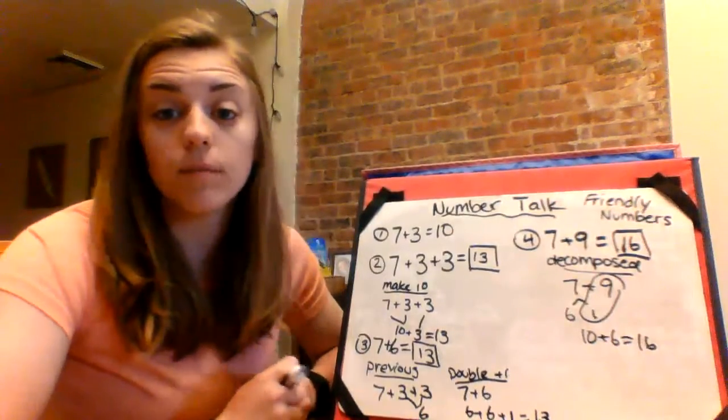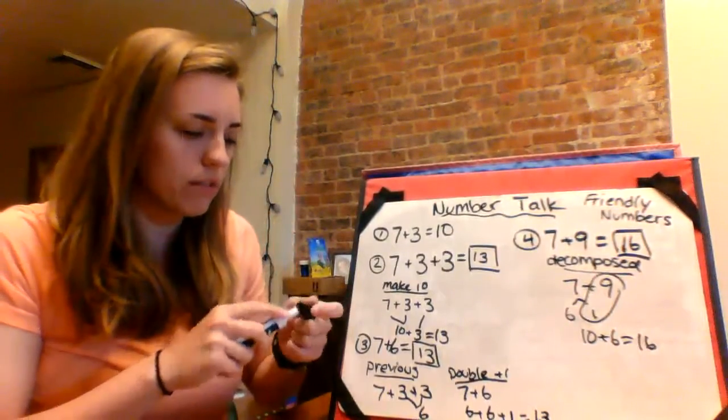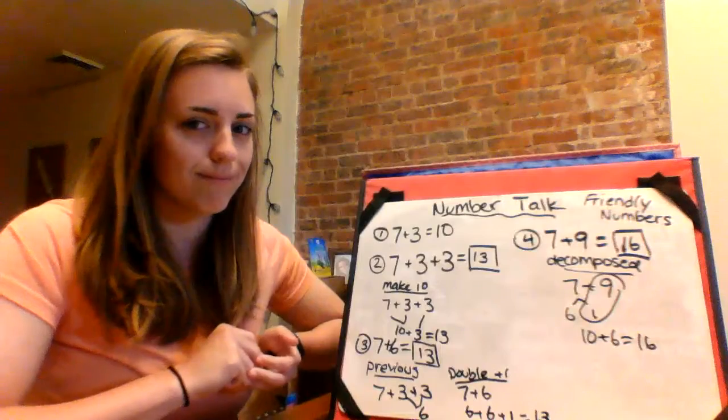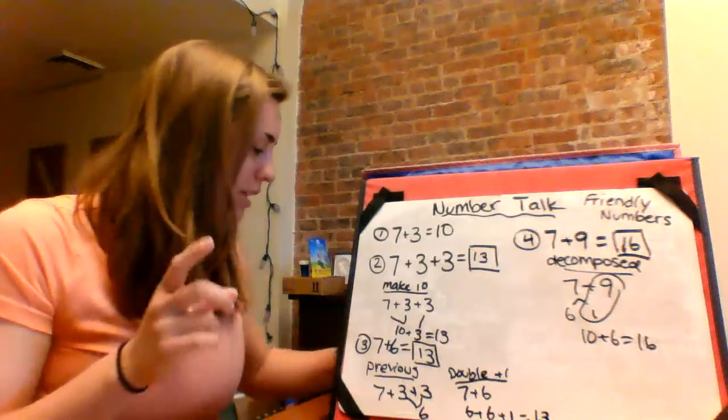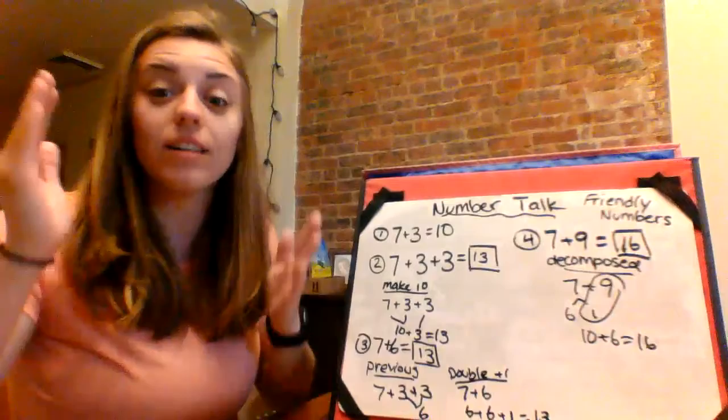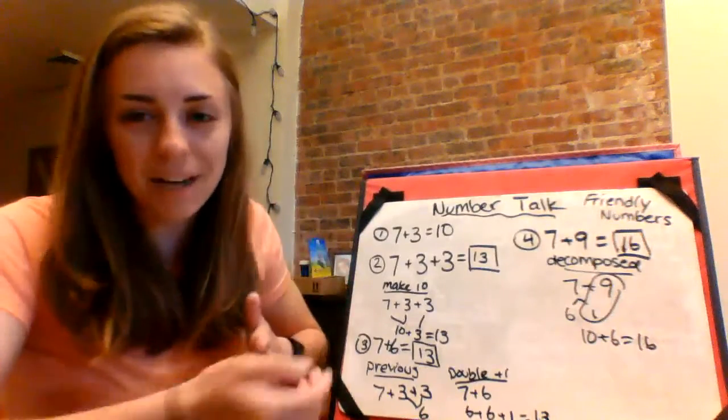You also could have counted on. What number are you going to start with, though, if you count on? The seven or the nine? The nine. Why? When we're counting on, we always start with the biggest number.